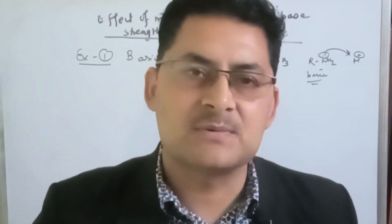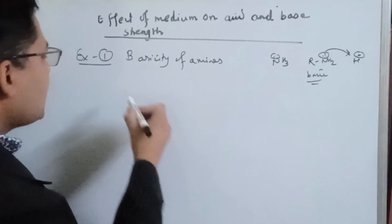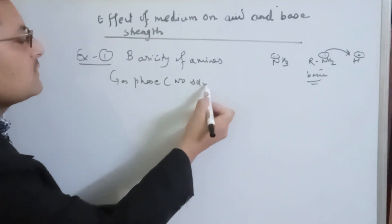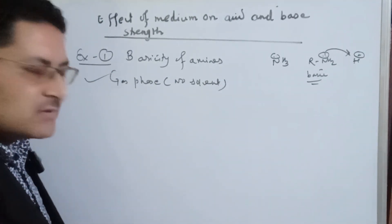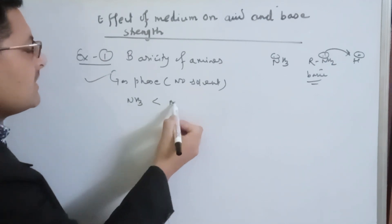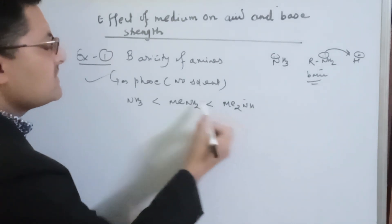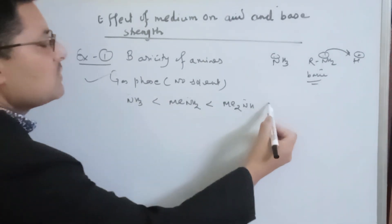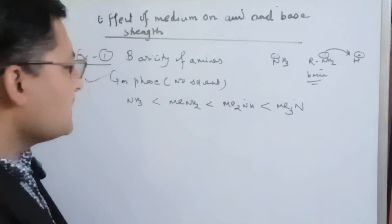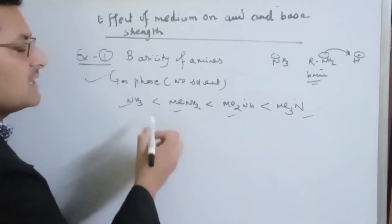The medium tends to change the basicity of amines. When there is no solvent — in the gas phase — we have ammonia, primary amine, secondary amine, and tertiary amine. All amines are basic.